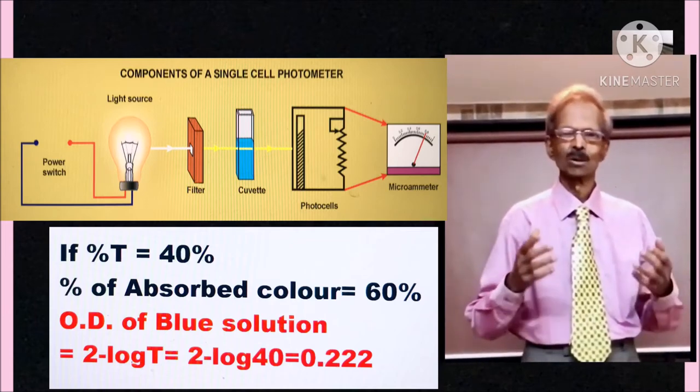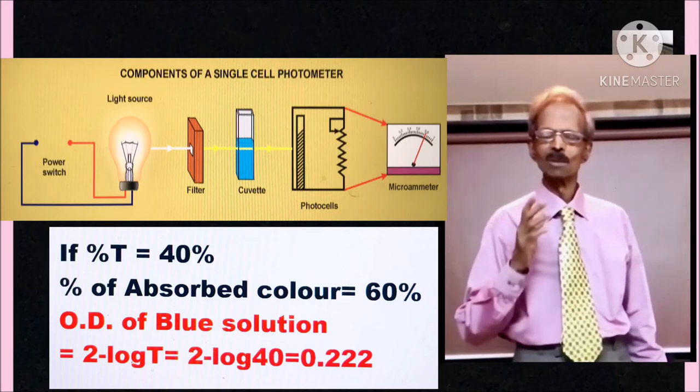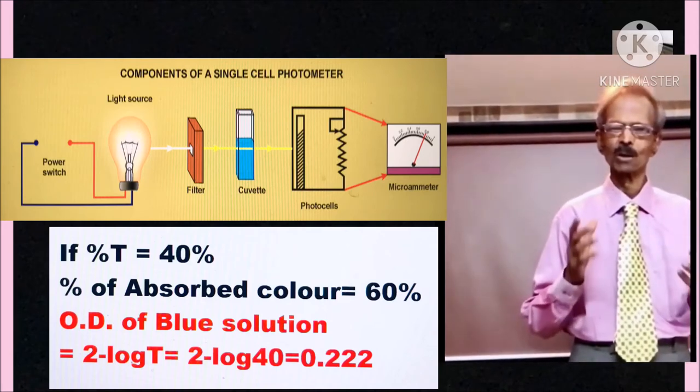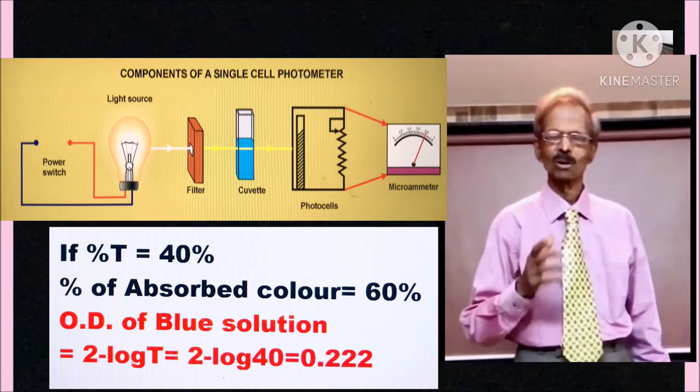OD is the unit of measuring density of color solution, and as I said earlier, it can be calculated by using the formula 2 minus log T.